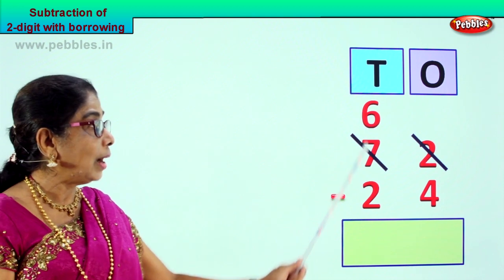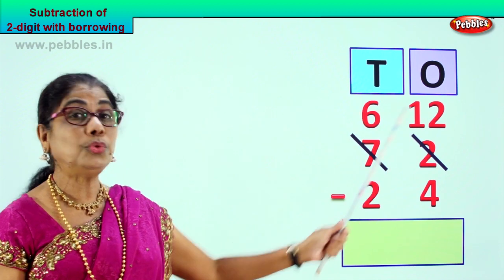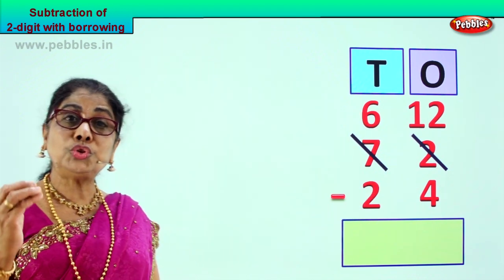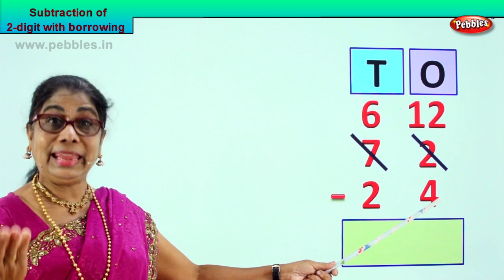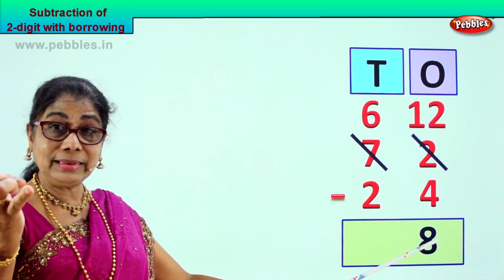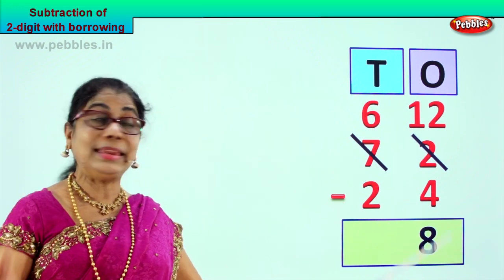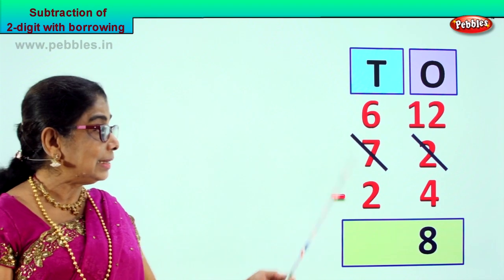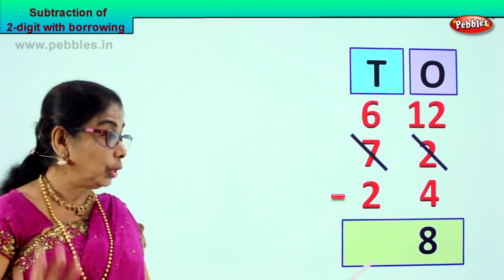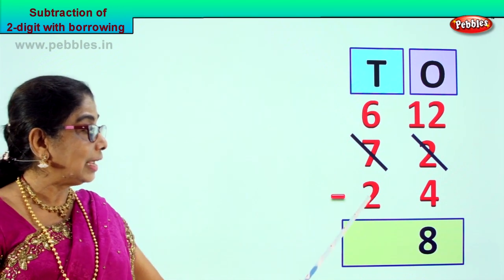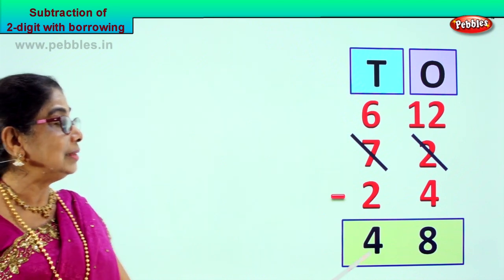We borrow 1 ten and bring it to the 1's place, and it will be 10 plus 2 — that's 12. We borrow 1 from here and so there is 6 left — 7 take away 1 is 6. Now 1 ten plus 2 ones gives you 12. 10 we got from this side and 2 makes 12. Now we will do 12 take away 4. What is 12 take away 4? It is 8. So from 12 take away 4 is 8, and here you have 6 minus 2 — 6 take away 2 is 4. Your answer is 48.